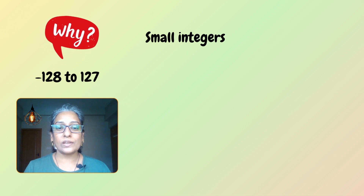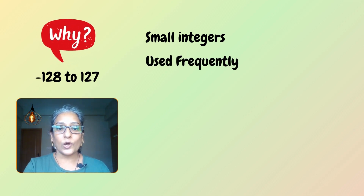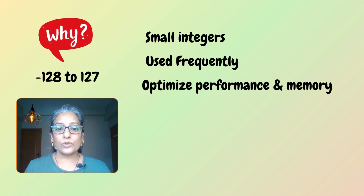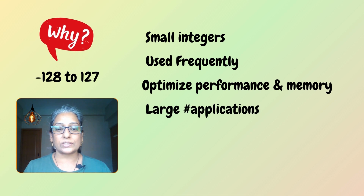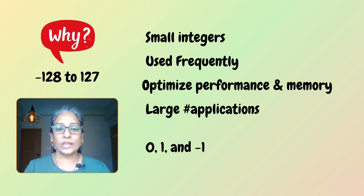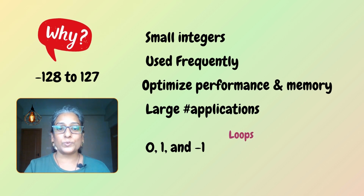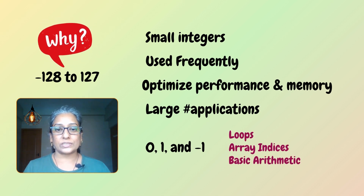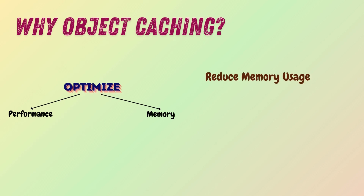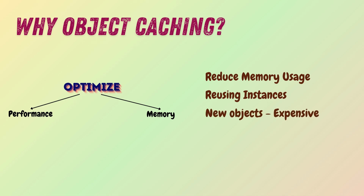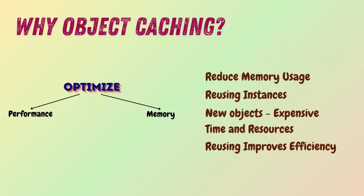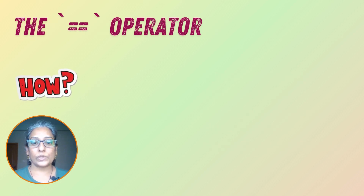Smaller integer values are frequently used in programming. By caching these commonly used values, Java can optimize performance and memory usage for a large number of applications. Values like zero, one, and minus one are especially common in loops, array indices, and basic arithmetic. Object caching reduces memory usage by reusing common instances, and also improves performance since creating new objects can be expensive in terms of time and resources.